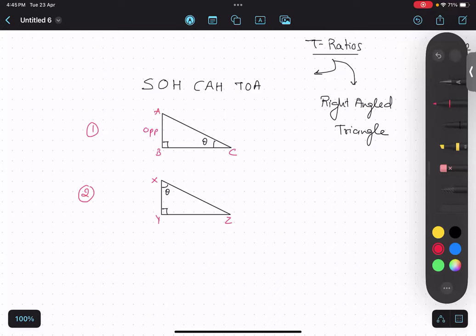Opposite means opposite to theta. Yes or no? Yes. And what is the hypotenuse? It will be AC. AC. So this is the hypotenuse and the remaining side is adjacent.